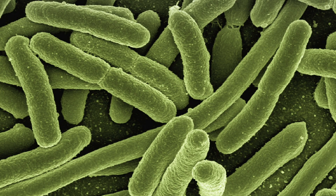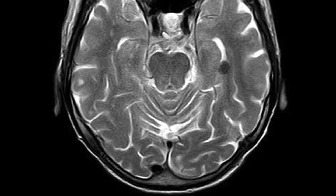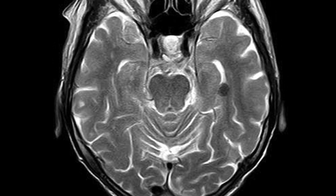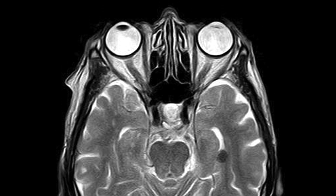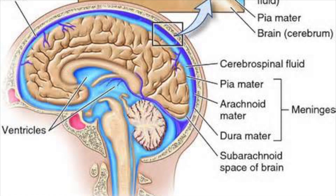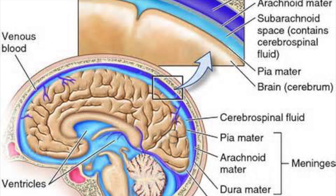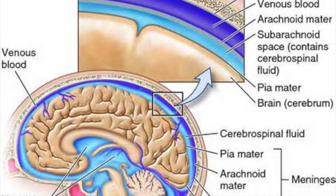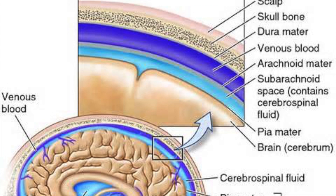Hello and welcome to Dr. Doctor. Today we talk about meningitis. Meningitis is a life-threatening condition which affects the protective layer around our brain and spinal cord. This layer is known as the meninges, and hence the term meningitis, which means inflammation of the meninges.